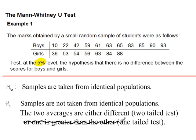So we don't need this. Okay, so H1. Samples are not taken from identical populations. The two averages are different.